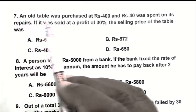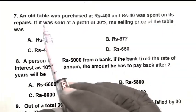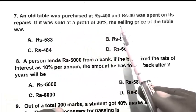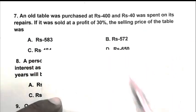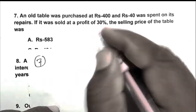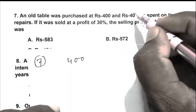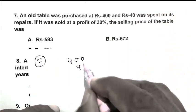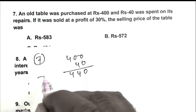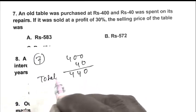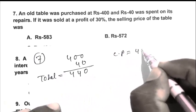Q7. An old table was purchased at Rs. 400 and Rs. 40 was spent on its repair. If it was sold at a profit of 30%, the selling price of the table was. So friend, he purchased the table at Rs. 400. And repair cost 40. So friend, total cost. So friend, CP become 440.